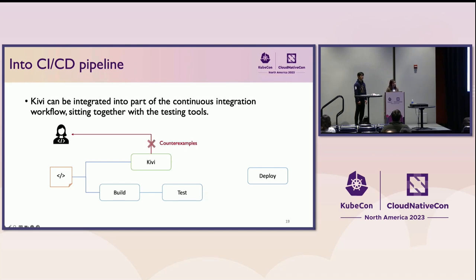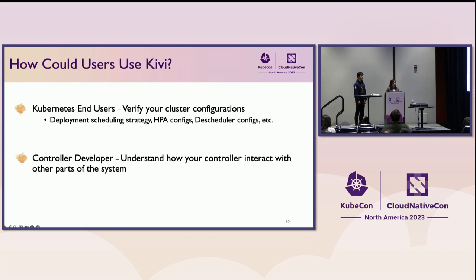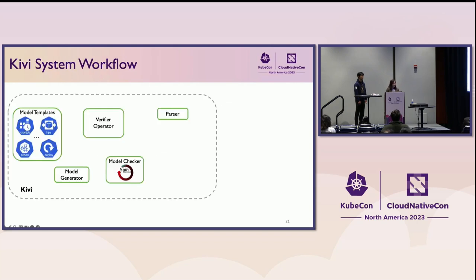If Kiwi finds something wrong, we return a counter-example explaining what can actually happen. So how could a user use Kiwi? For any user, you can use it to verify Kubernetes clusters — provide deployment scheduling strategies, HPA configurations. For controller developers, you can use our system to understand how your controller interacts with other parts of the system.